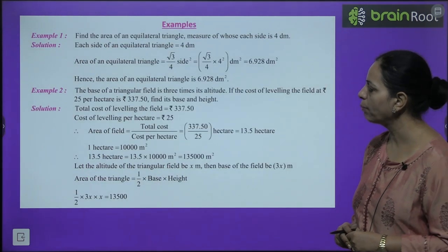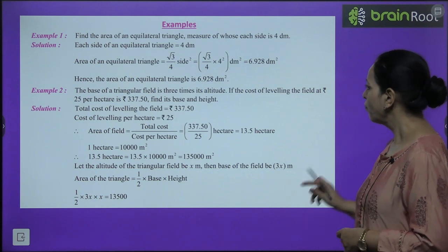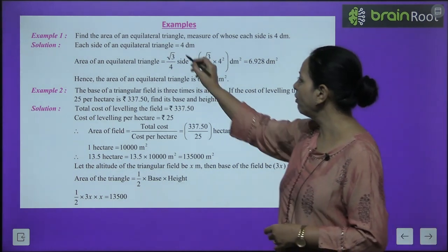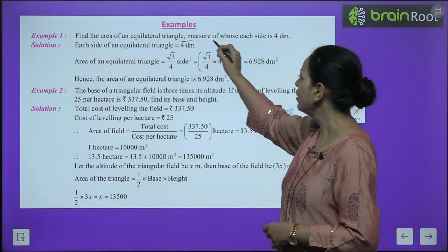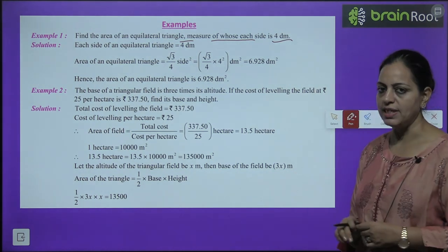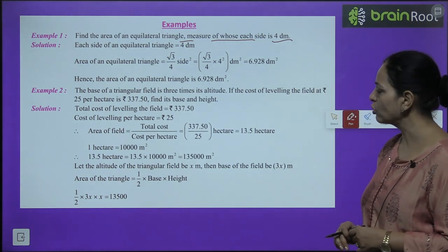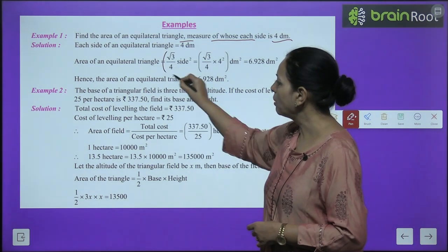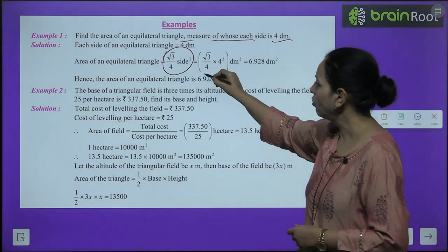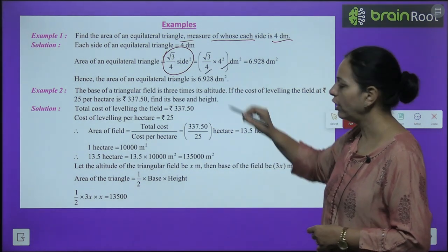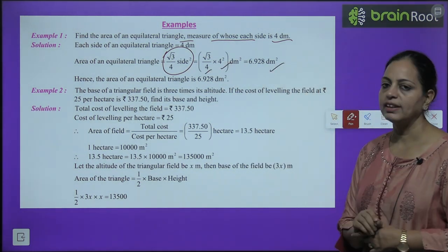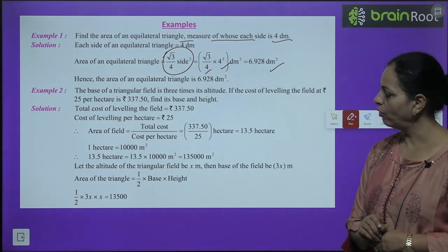Example 1: Find the area of an equilateral triangle whose each side is 4 decimeters. Using the formula: area = (√3/4) × side² = (√3/4) × 4² = 4√3 decimeter square.